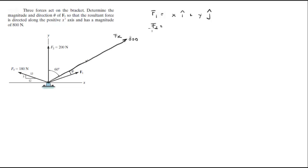f2, when you're doing this try to line them up so they're easier to add, so f2 is 0 on the x direction and it's positive 200 on the y direction.